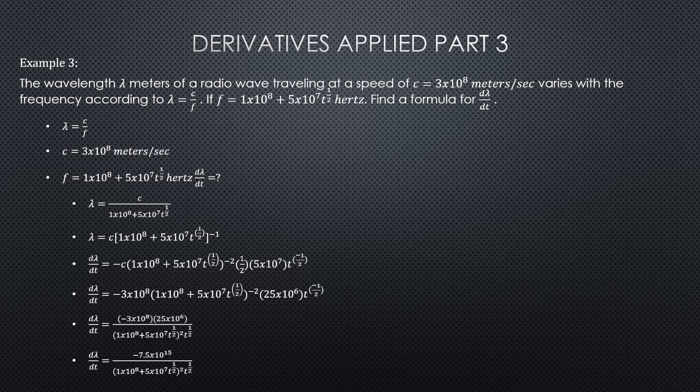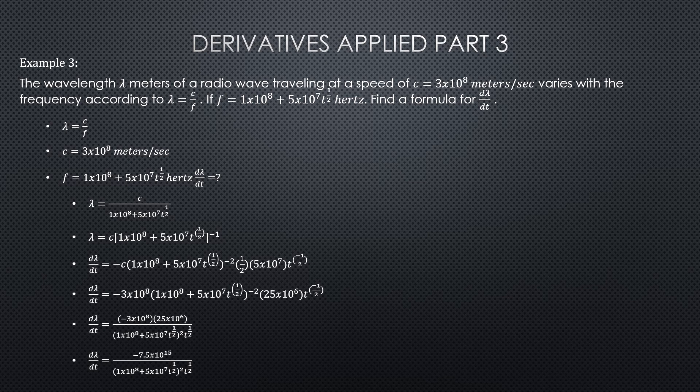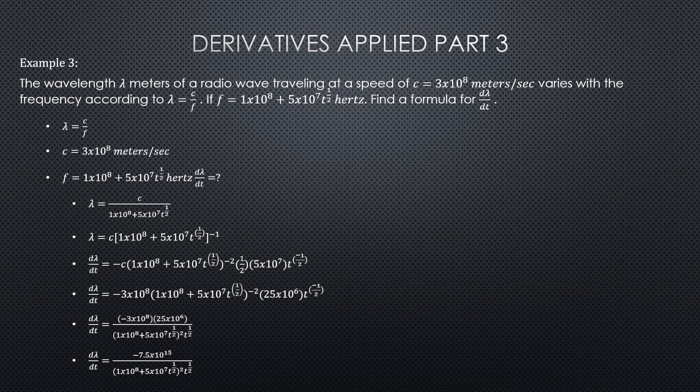And then we get our final answer: dλ/dt equals minus 7.5 times 10¹⁵ divided by (1 times 10⁸ plus 5 times 10⁷ t^(1/2))² times another t^(1/2) power.